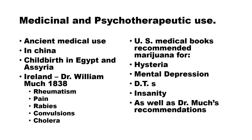Medicinal and psychotherapeutic use. There is ancient medical use in China. Childbirth in Egypt and Assyria used it medicinally. In Ireland, Dr. William Munch in 1838 recommended marijuana to treat rheumatism, pain, rabies, convulsion, and cholera. U.S. medical books recommended marijuana for hysteria, mental depression, DTs, and insanity, among other conditions. These medical books were largely in effect before the U.S. Civil War.